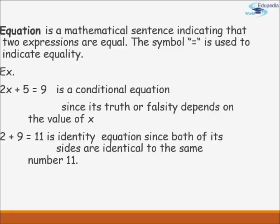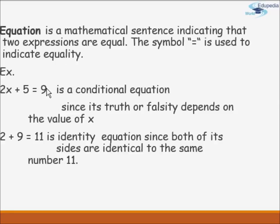One thing to understand about equations: if you look at this conditional equation or the identity equation, the left-hand side is actually equal to the right-hand side. In 2x plus 5 equals 9, the equality sign divides the expression — the left-hand side is 2x plus 5, and the right-hand side is 9. Similarly, 2 plus 9 is on the left-hand side and 11 is on the right-hand side.